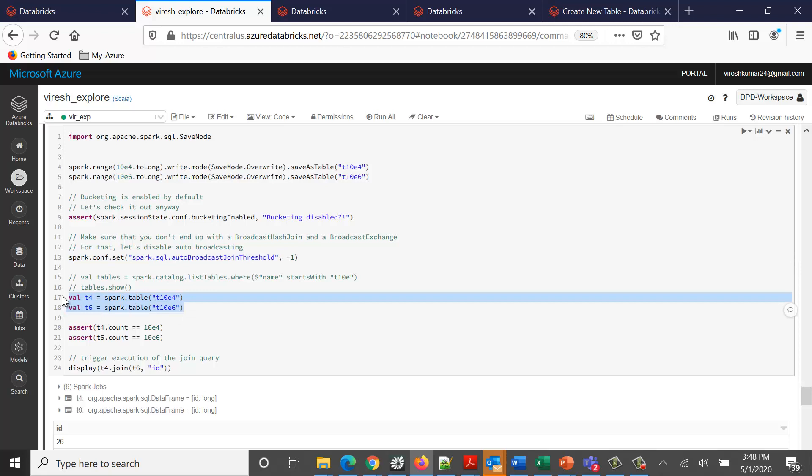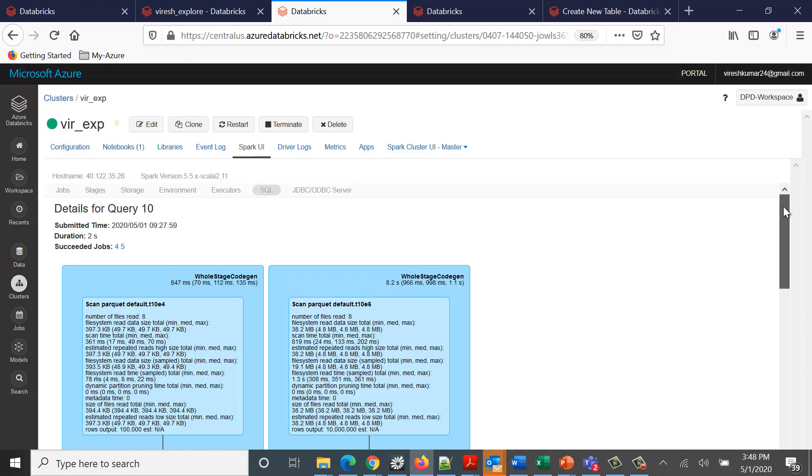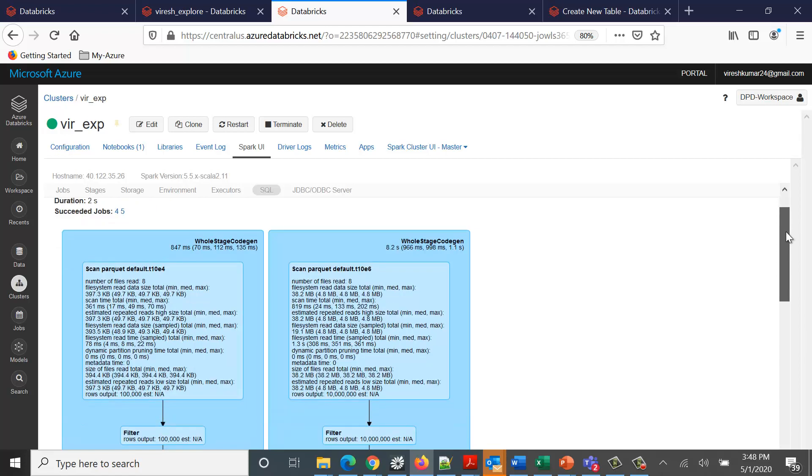We have created two dataframes for these two plain tables where we haven't applied bucketing. We try to apply a join on top of that. If I run this particular join query and try to look at the query plan, this is how a query plan looks for this command.